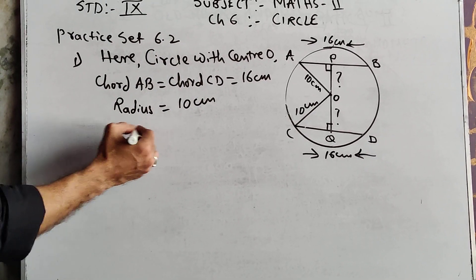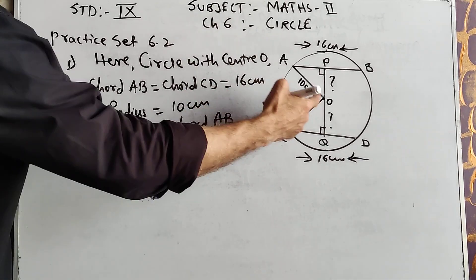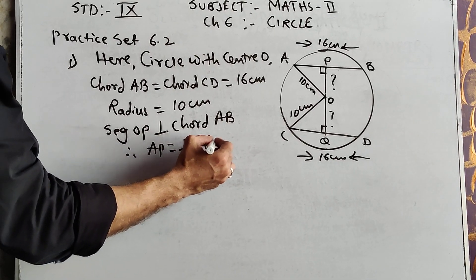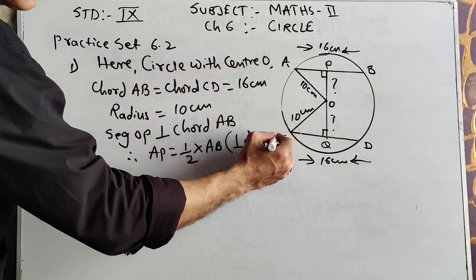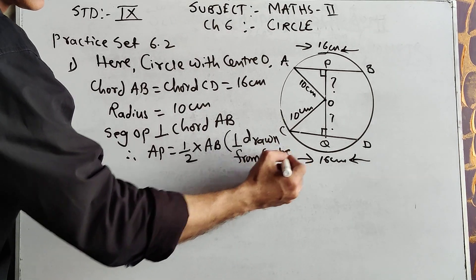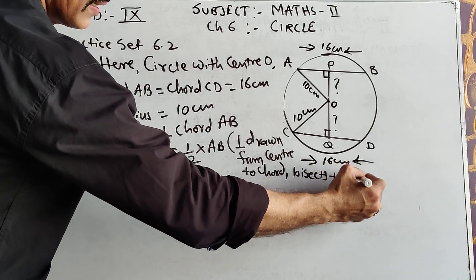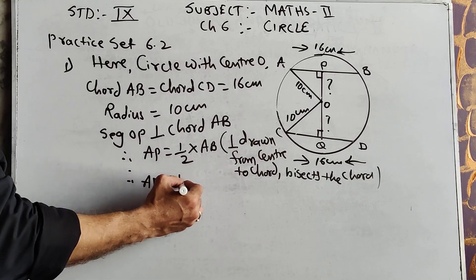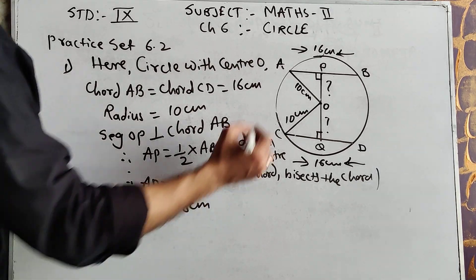OP is perpendicular to chord AB, therefore AP is half of AB — you know this from the previous exercise. The perpendicular drawn from the center to the chord bisects the chord. Therefore AP equals half of 16, which gives us 8. AP is 8 centimeters.